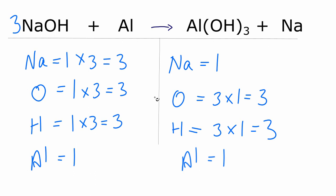So at this point, the only thing that's not balanced are these sodium atoms. I have three on the reactants and then one on the product. If I put a three in front of this sodium, one times three, that would give me three.